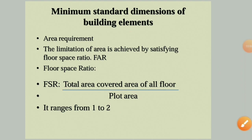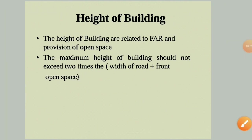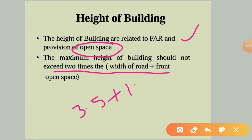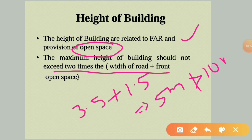The height of the building is related to the floor area ratio and the provision of open spaces. The maximum height of the building should not exceed two times the width of the road plus the front open space. For example, if the road width is 3.5 meters and the front open space is 1.5 meters, the total is 5 meters, so the maximum building height is 10 meters.